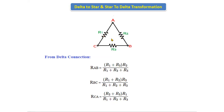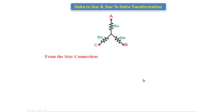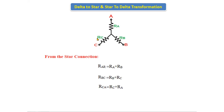Here we are using series connection as well as parallel connection — two resistors in series, then connected in parallel with R1. This is about the delta. For the star connection, with respect to terminals A and B: RAB = Ra + Rb. With respect to RBC: RBC = Rb + Rc. With respect to RCA: RCA = Rc + Ra.